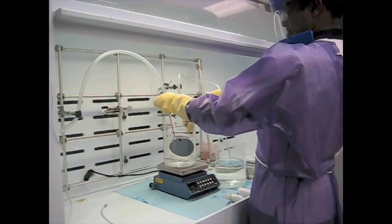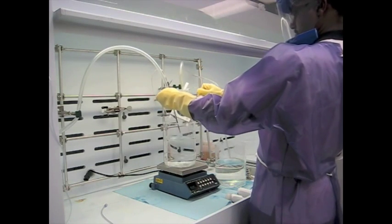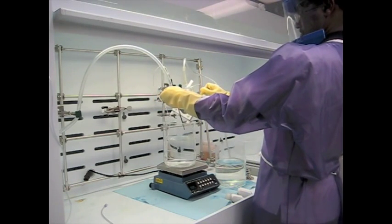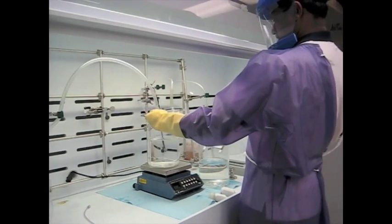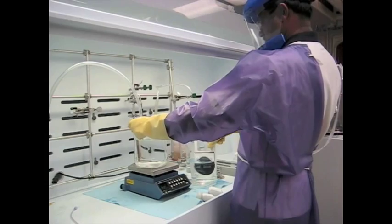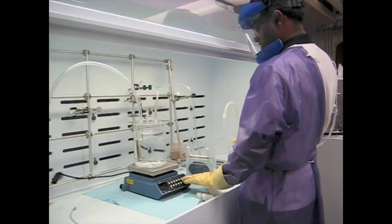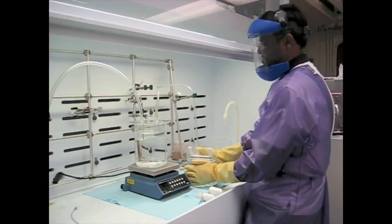After rinsing the wafer in DI water, the oxide layer is stripped off using BOE. The next step is to bond the wafer to a glass substrate, enclosing the etched microchannels. An anodic bonding setup is designed for this purpose.